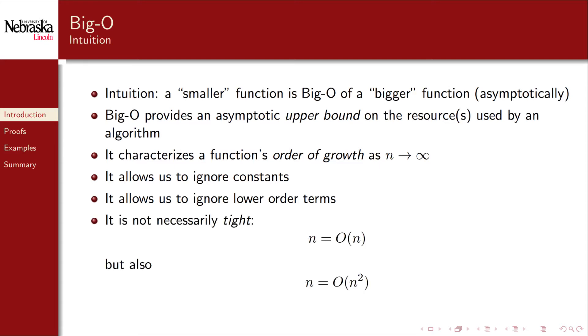However, it's important to understand that big O only provides an upper bound, and not a tight characterization. For example, a linear function is big O of n, but it is also big O of a quadratic function. In a supplemental video, we cover big theta analysis, which provides a tight asymptotic bound.